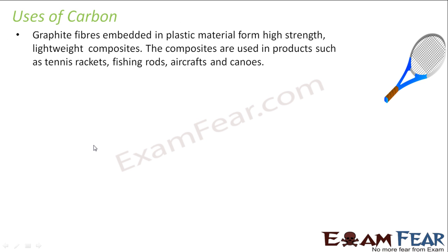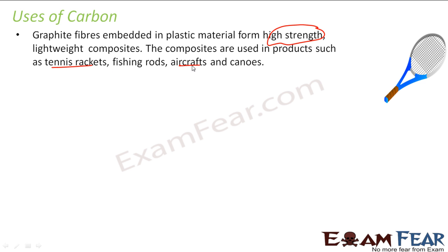Carbon fiber is embedded with plastic materials to improve strength. You see the tennis racket — these fibers are plastic fiber, but you embed carbon in this to give strength to it. Because if it is very weak, with one shot it will break. So carbon is used in tennis rackets, also in aircraft, and in fishing rods.